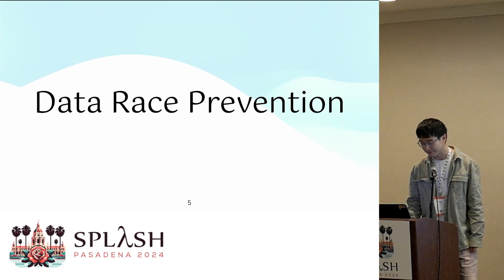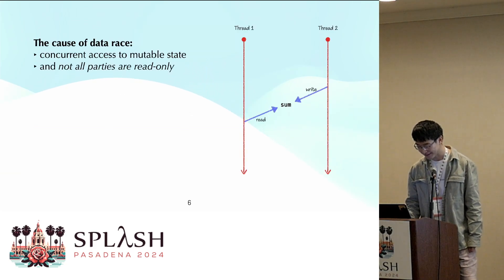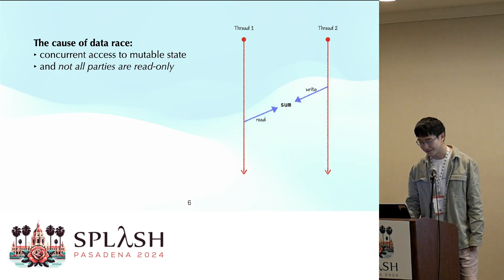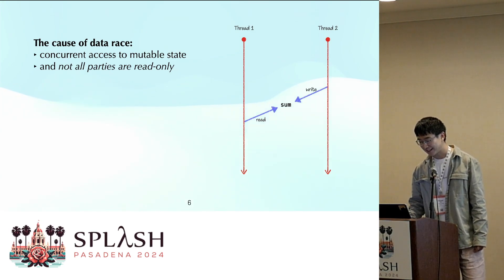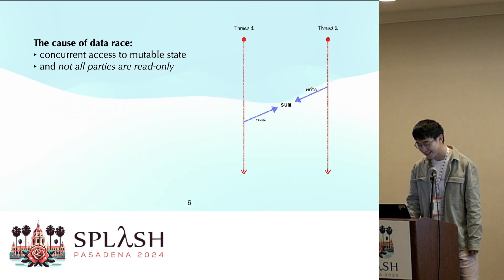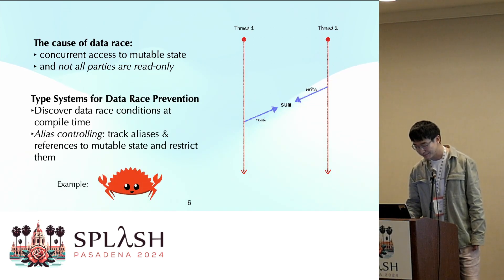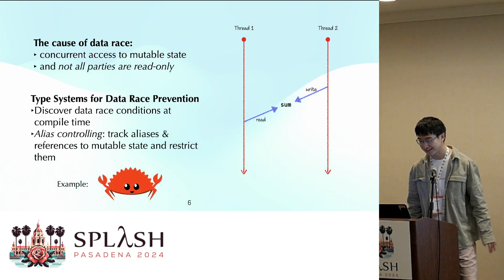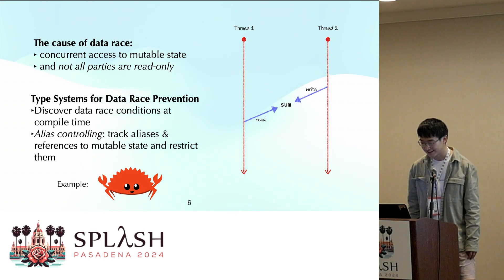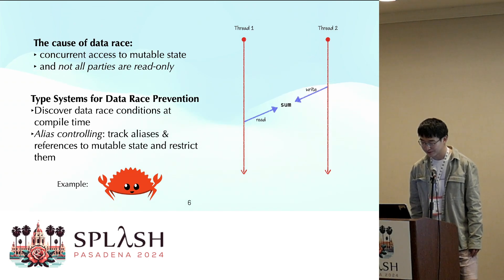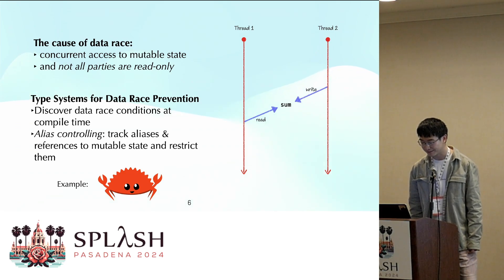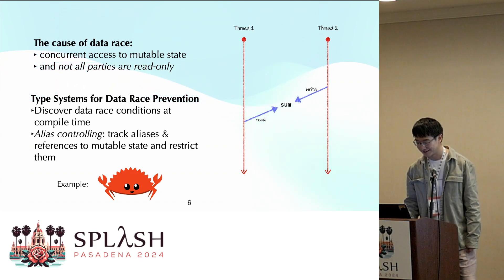Needless to say, data races are bad and often really difficult to find and fix. So we want to prevent them — but how? Data races are caused by concurrent access to mutable data, where multiple threads access the same piece of data and some of them are mutating it. There are type systems that try to detect and prevent data race conditions at compile time using a technique called alias controlling, where the type system tracks aliases or references to mutable data and restricts them. One of the most prominent examples is Rust with its ownership system.